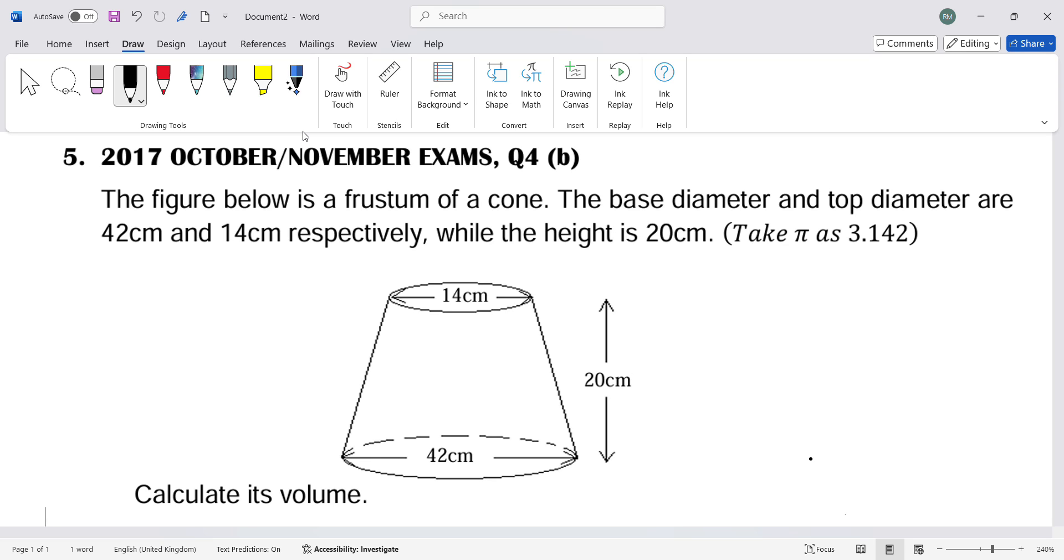To calculate the volume, I'm going to use the formula: V = (h/3) × π × (R² + r² + R×r), where h is height over 3, times pi, times the sum of capital R squared plus small r squared plus capital R times small r.